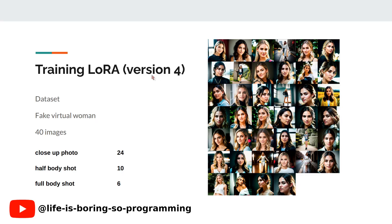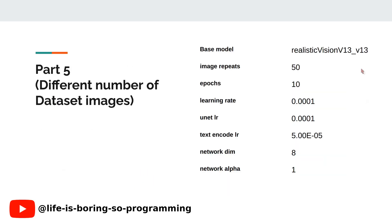Version 4 has 40 training dataset images. I created 20 more images for this dataset: 24 close-up, 10 half-body, and 6 full-body images. The other training parameters are as follows.